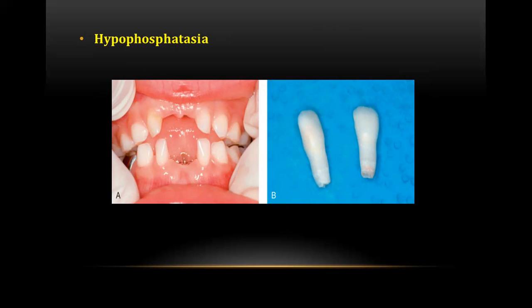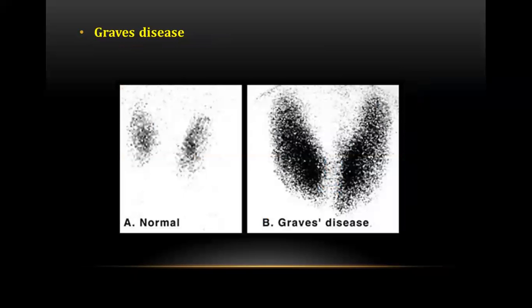The next question was about hypophosphatasia, an image-based question showing two exfoliated immature teeth. The dental findings of hypophosphatasia include premature exfoliation of anterior teeth associated with deficient cementum. Loss of alveolar bone may be limited to the anterior region. The disease is characterized by improper mineralization of bone caused by deficient alkaline phosphatase activity in the serum, liver, bone, and kidney.